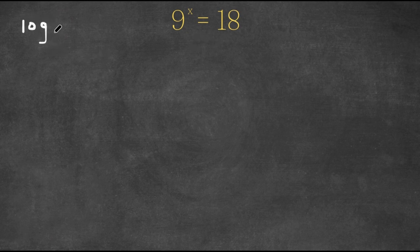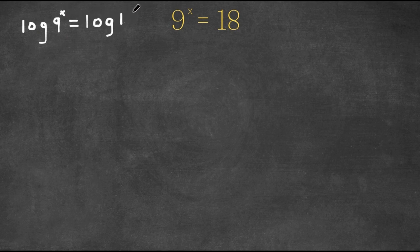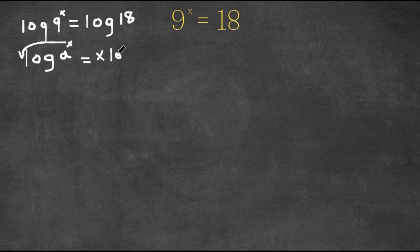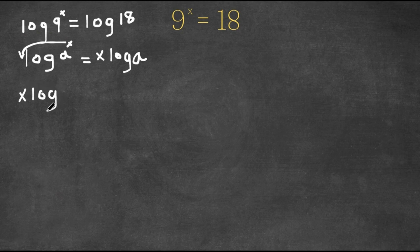So now we have log 9 to the power of x equals log 18. So if we have something in the form log a to the power of x, this is known as the power property. And what it means is that we could actually move this exponent in front of the log, meaning this would also equal x log a. So I'm actually going to change log 9 to the power of x into x log 9.